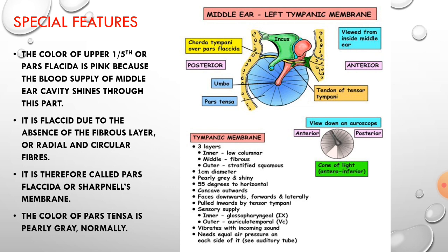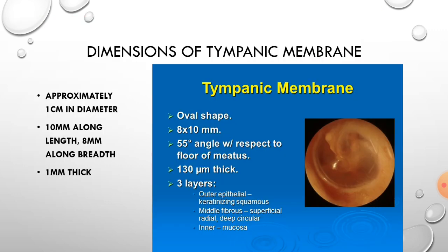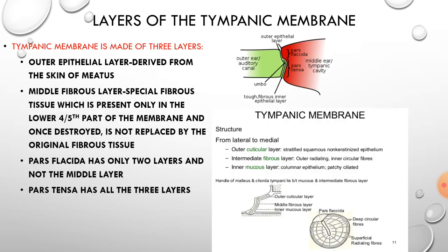In pars flaccida the middle fibrous layer is absent, which is why its color differs from pars tensa. In pars tensa all three layers are present. We can also see a cone of light antero-inferiorly — the tympanic membrane is divided into four quadrants, and in the antero-inferior quadrant we see a cone of light, which is the reflection of light from the otoscope. The membrane is approximately one millimeter thick.